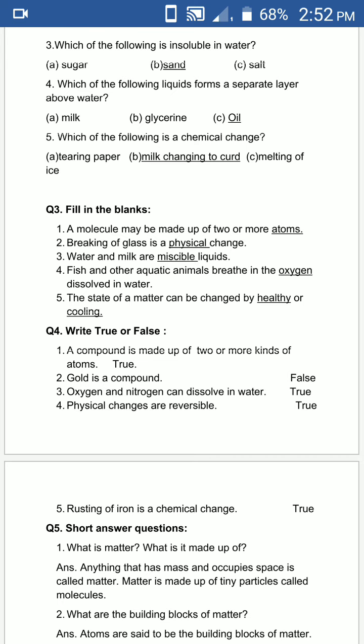The fourth question is write true or false. First is: a compound is made up of two or more kinds of atoms. Compound hai, woh do ya do se zyada atom se banta hai. Is it true or false? Yes, it is true. It is a correct statement. Your answer is true. Second is: gold is a compound. The answer is false. Gold ek type ke atom se banta hai. Gold is an element, woh compound nahi hai. Isi liye gold is a compound - false.